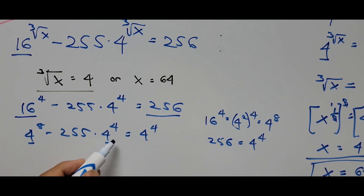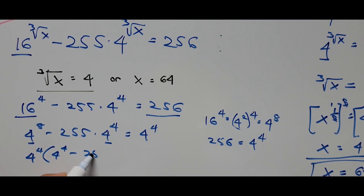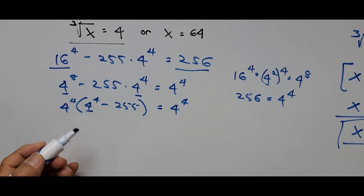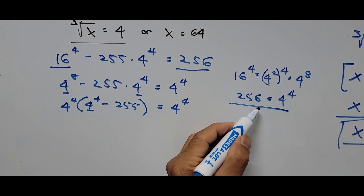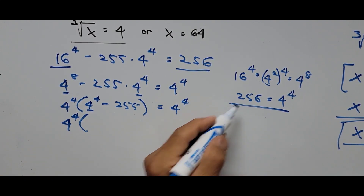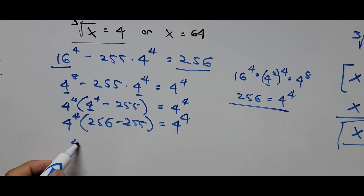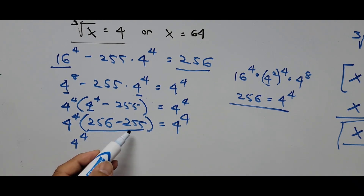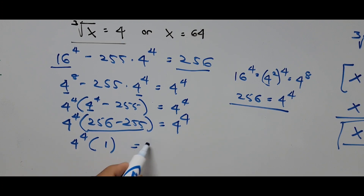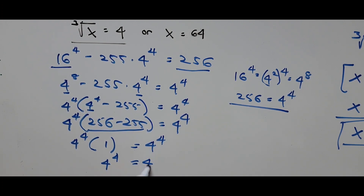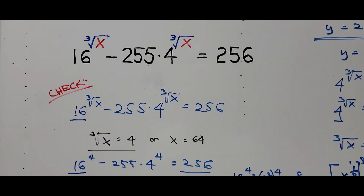From here, we can factor out 4 raised to the 4th power. That becomes 4 raised to the 4th power times the quantity 256 minus 255, equals 4 raised to the 4th power. And 256 minus 255 is 1, so 4 raised to the 4th power times 1 equals 4 raised to the 4th power, equals 4 raised to the 4th power. This confirmed that the value of x is 64, for the cube root of x is 4. And so that's all for now.